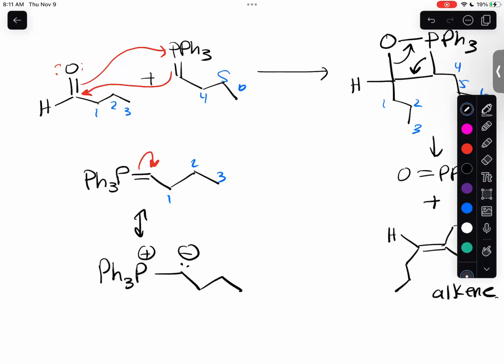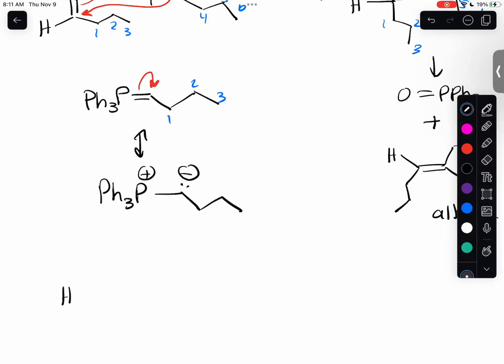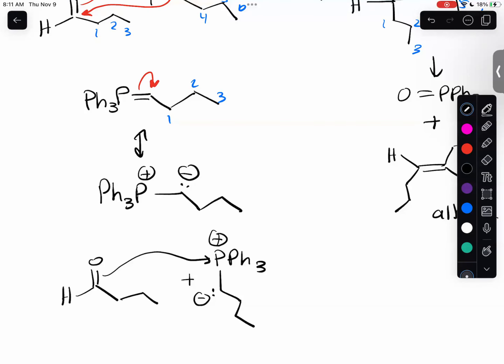If you look at the mechanism using the resonance structure, you can understand why the oxygen on the aldehyde or ketone reacts with the phosphorus - because it is electrophilic, it wants to be attacked, it's positively charged. And you understand why the carbon is the nucleophile because that's where the negative charge is. All you have to do is draw the resonance structure. Both mechanisms are correct - they're just resonance structures of each other.